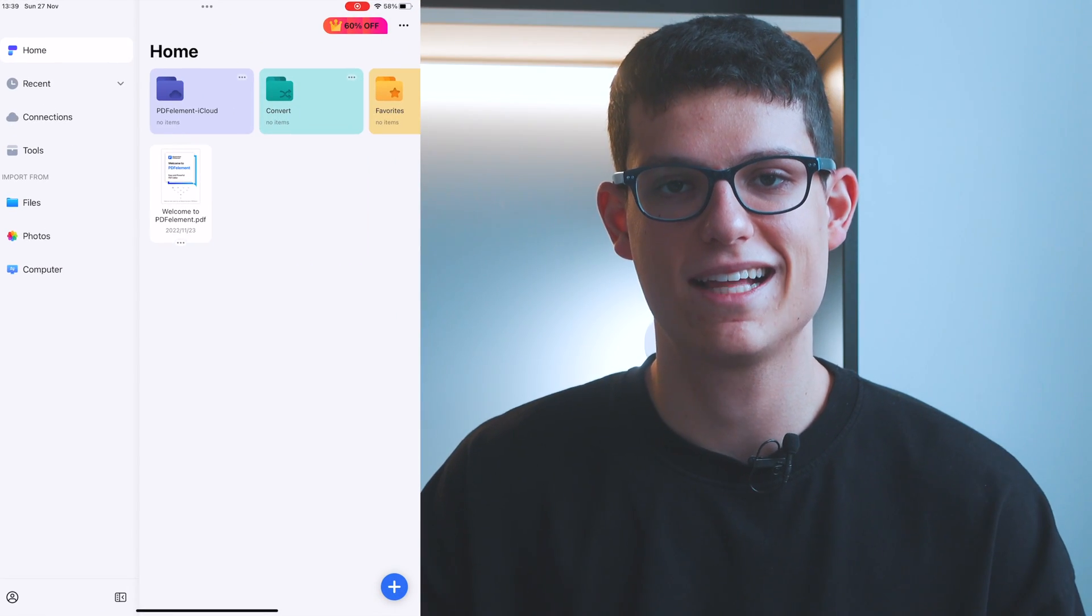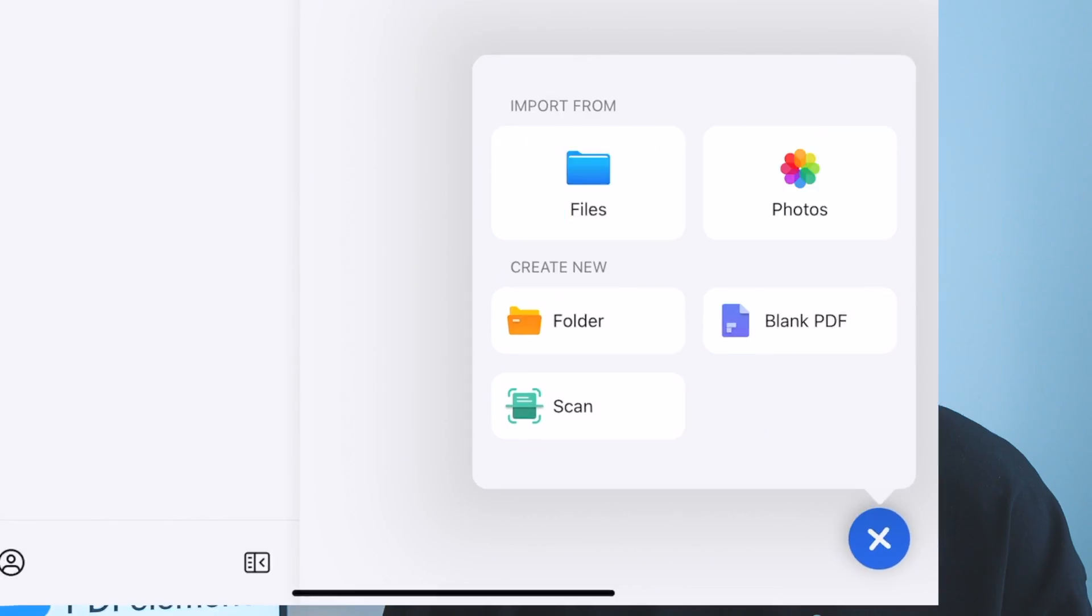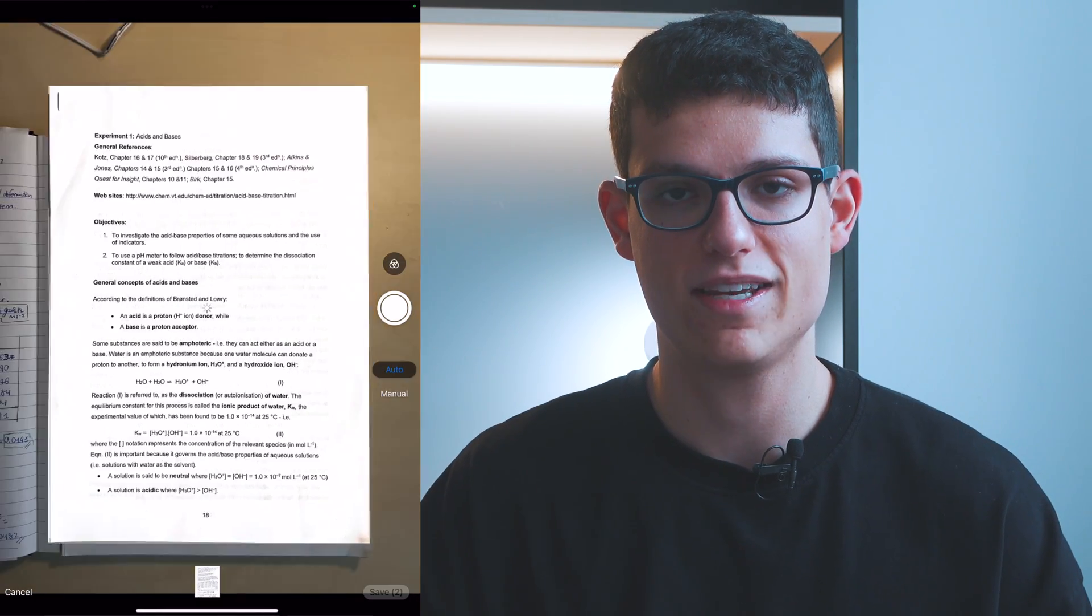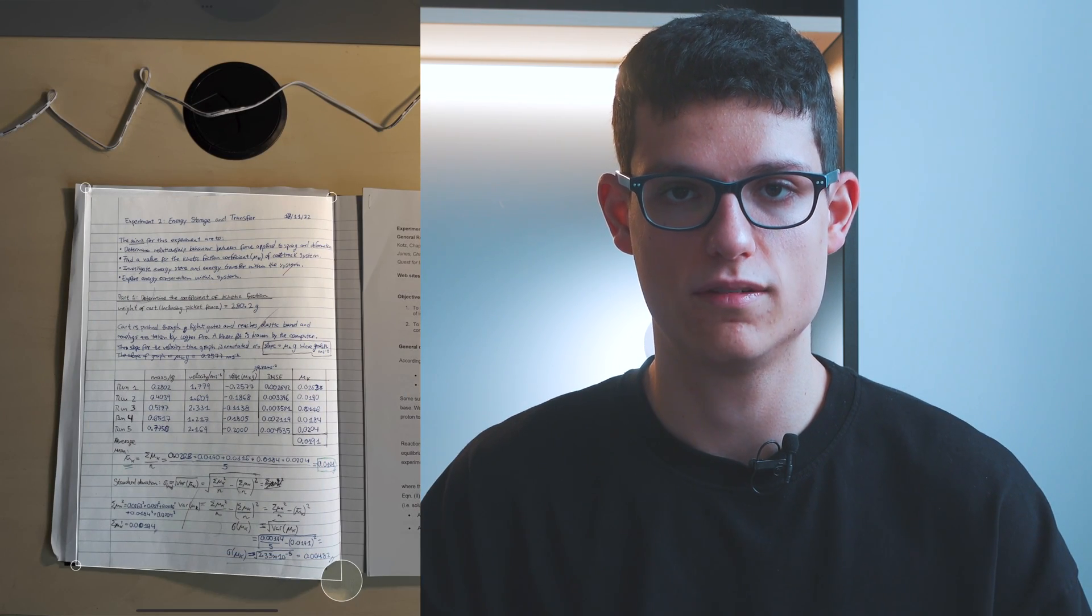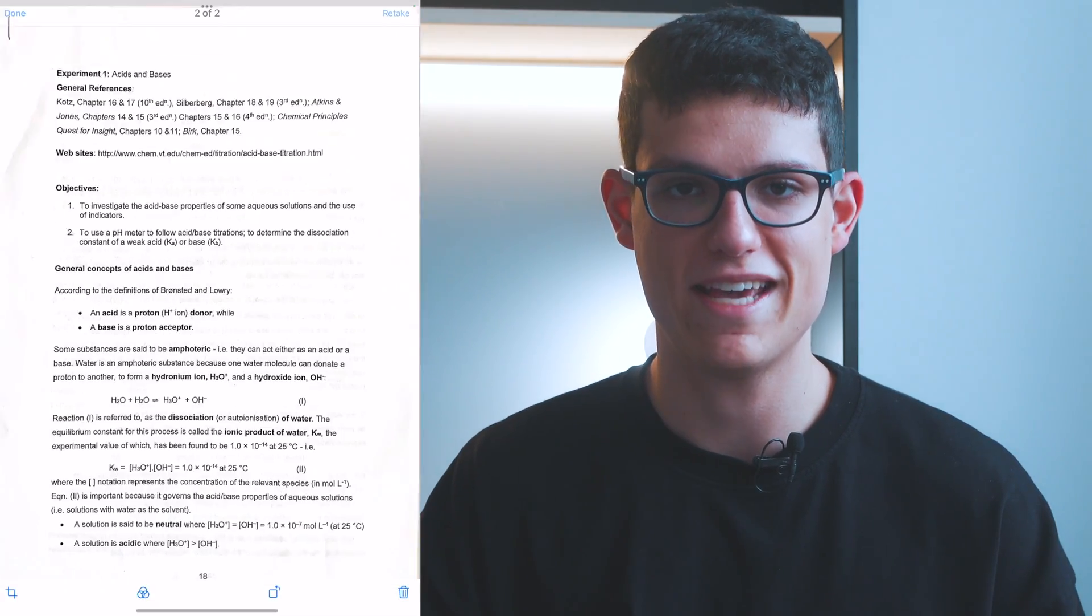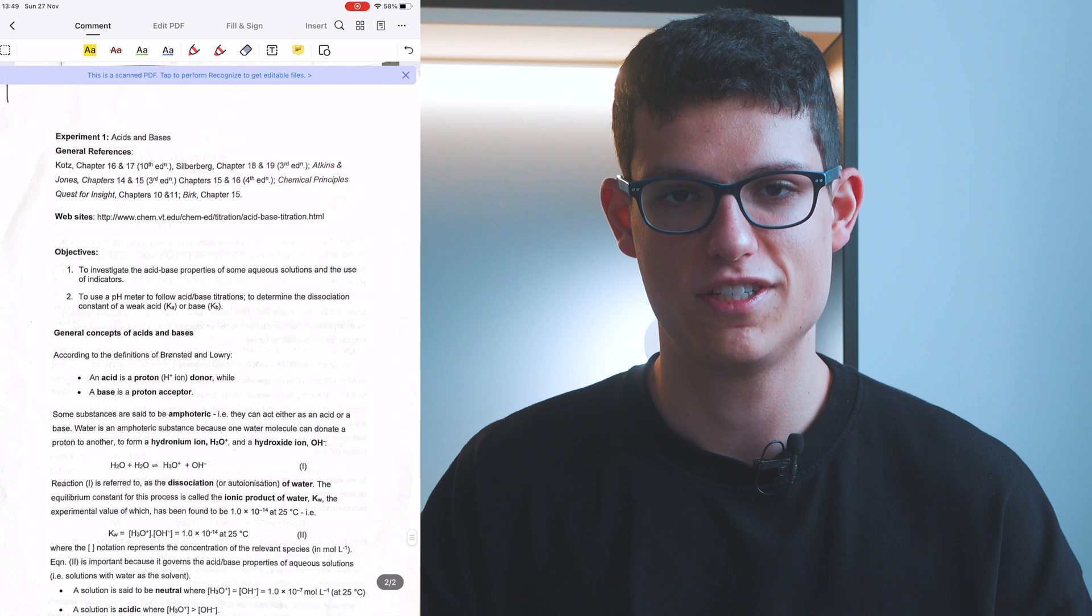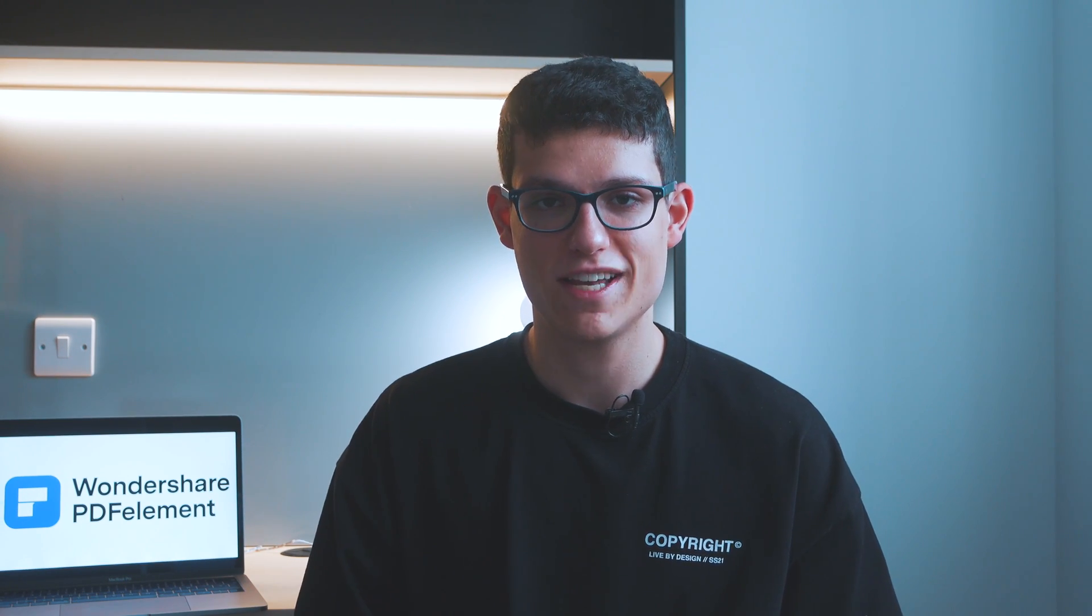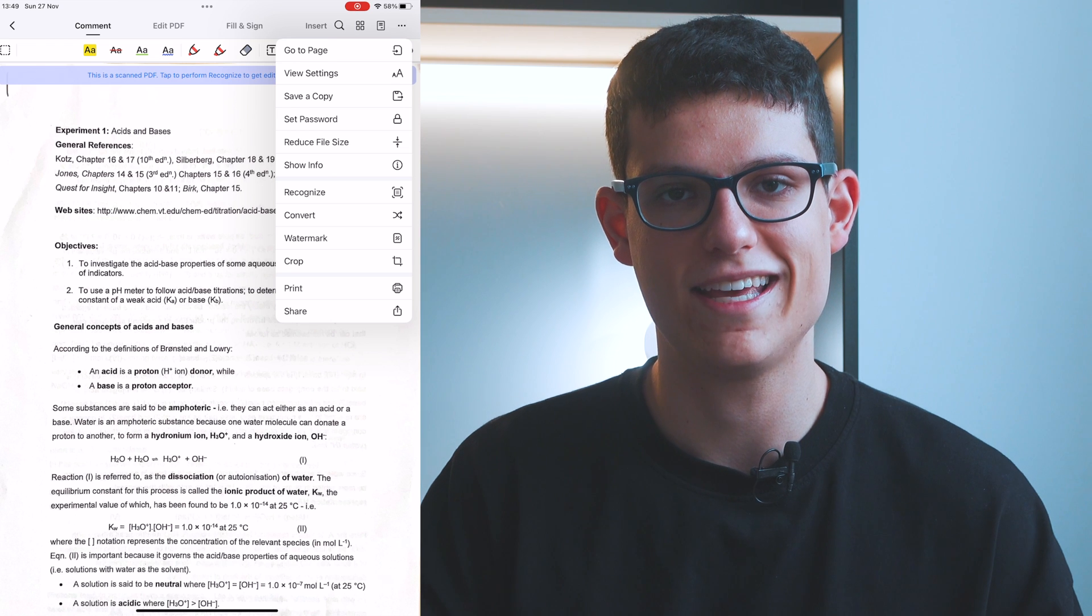You will first have to open PDFElement and click the plus button at the lower right corner of the screen. Then you will tap the scan button and you will be able to take pictures of your book. You can do this either by letting your iPad take the pictures automatically or you can manually take them yourself and then adjust the edges of the screen so that the text is inside of it. Once you're done with the scanning, you will see a preview of your PDF and once you're happy with it, you can just hit save. Now you will see a PDF version of the pages that you just scanned, but let me tell you that we are not finished yet. These pages are not yet fully interactive. So you will tap the three dots at the upper right corner of the screen and you will then hit recognize.